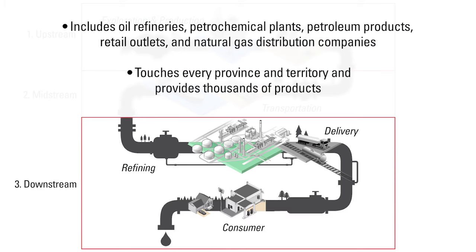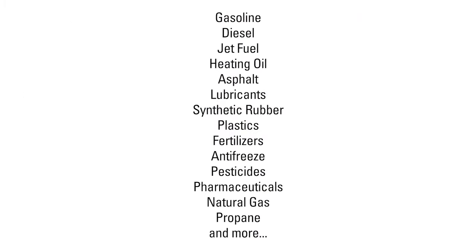The downstream industry includes oil refineries, petrochemical plants, petroleum products, retail outlets, and natural gas distribution companies. The downstream industry touches every province and territory and provides thousands of products such as gasoline, diesel, jet fuel, heating oil, asphalt, and lubricants.